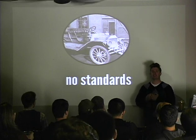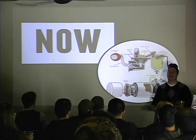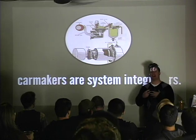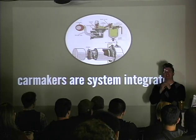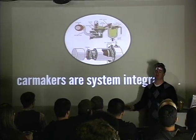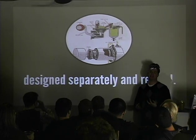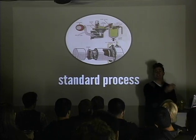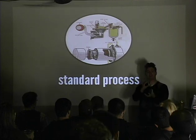The challenge: there were no standards. Two cars from the same company could be very different. Now things work much differently. Car makers are system integrators. Each inside the company, there are people responsible for one aspect of the car, making sure that one aspect is incredibly good. They share it across all production lines, multiple models use the same part. Each component is completely designed separately and reused - with a standard process: I expect this input, I will give you this output. Very optimized.